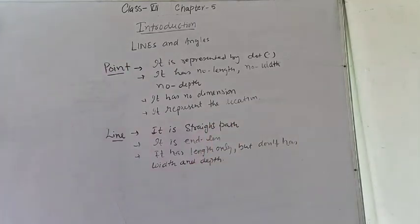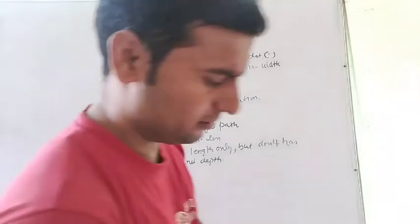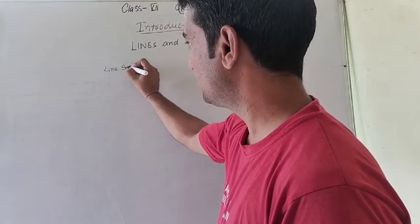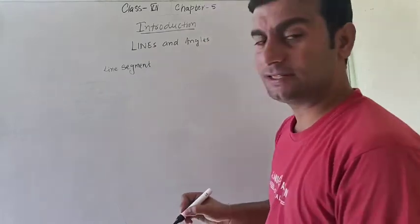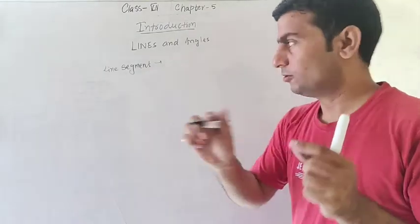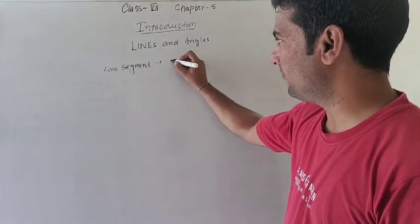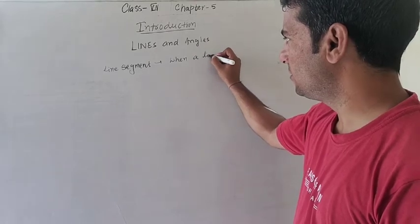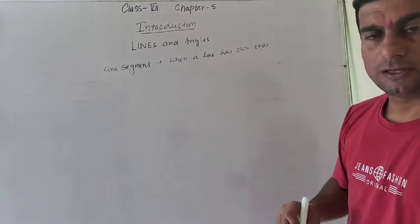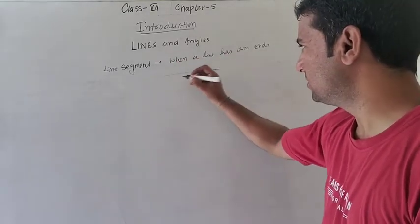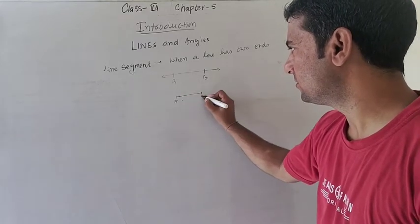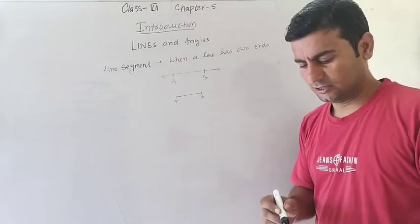So this is all about the line and point. Next, what is a line segment? When a line has both ends limited — that is, two endpoints — then it is called a line segment. Just like this line which has no end, but if we limit it at points A and B, then AB becomes the line segment.